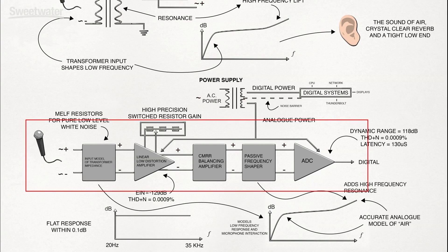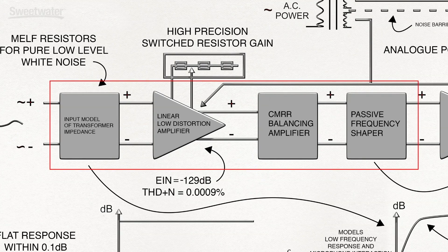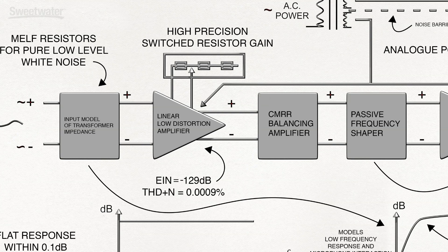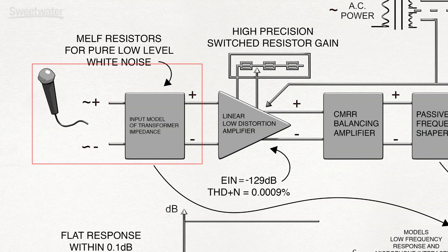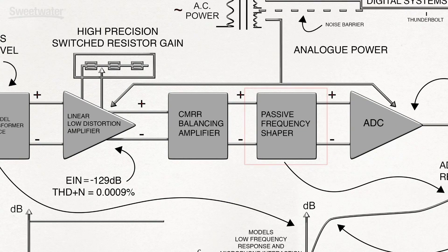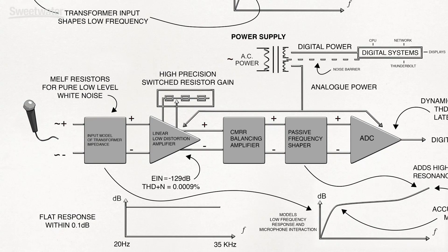So, how did we design a signal flow to produce the sound of air? We created the sound shaping effect of the transformer by using an authentic analog model of the original, designing a highly linear low distortion microphone amplifier, an input impedance model of the Red Transformer, and a passive frequency shaper to add resonance. This air circuit first appeared in the Claret Mic Pre stage.